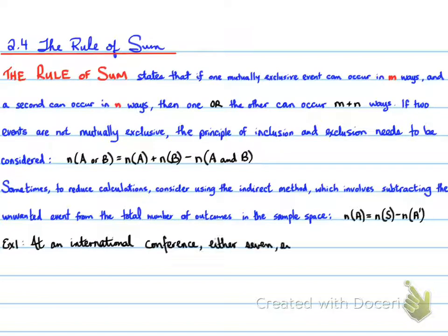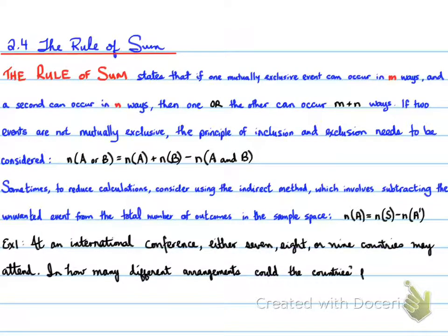Let's look at the first example. At an international conference, either seven, eight, or nine countries may attend. In how many different arrangements could the country's flags be flown? Well, if seven countries attend, you can have 7 factorial positions. If eight countries attend, it will be 8 factorial. And nine countries attend, it's 9 factorial. What we have here is basically M plus N ways.